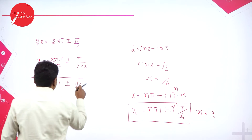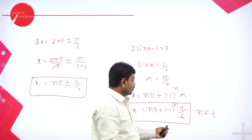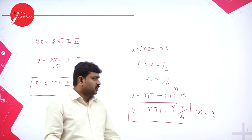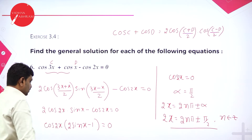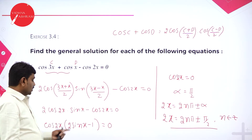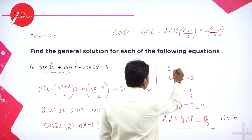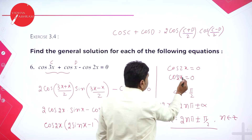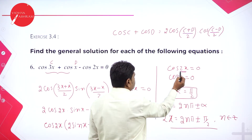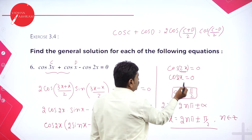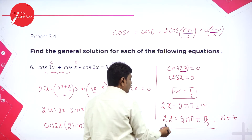So one solution is x equals n pi plus or minus pi by 4, and the other is x equals n pi plus (minus 1)^n times pi by 6. Here cos 2x equals 0 means alpha is pi by 2. Since we have 2x, write 2x equals 2n pi plus or minus alpha and solve for x. If product of two terms is 0 then each term is 0.